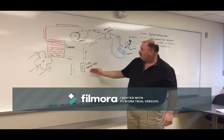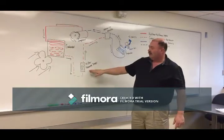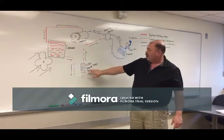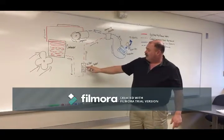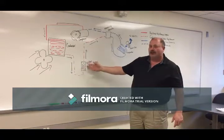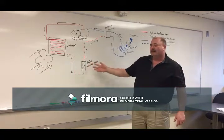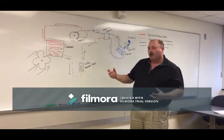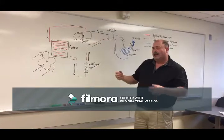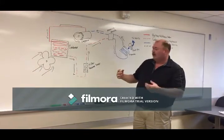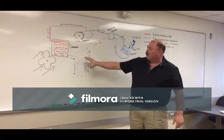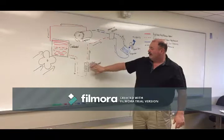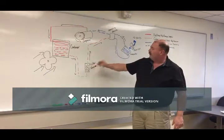We then bring it through a filter, otherwise known as a receiver dryer, where there's something called desiccant — the silica gel that you get when you buy electronics. It keeps the moisture away, so any moisture that manages to sneak into the system gets absorbed here.